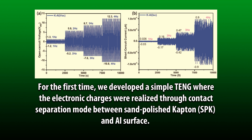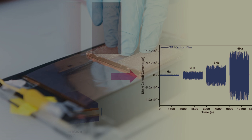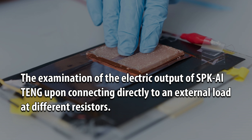For the first time, we developed a simple triboelectric nanogenerator where the electronic charges were realized through contact separation mode between sand-polished cuptofilm and aluminum surface. We demonstrated the energetic interfacial contact between these surfaces and observed satisfactory output performance. The examination of the electric output of SPK-AL triboelectric nanogenerators was conducted by connecting directly to an external load at different resistors.